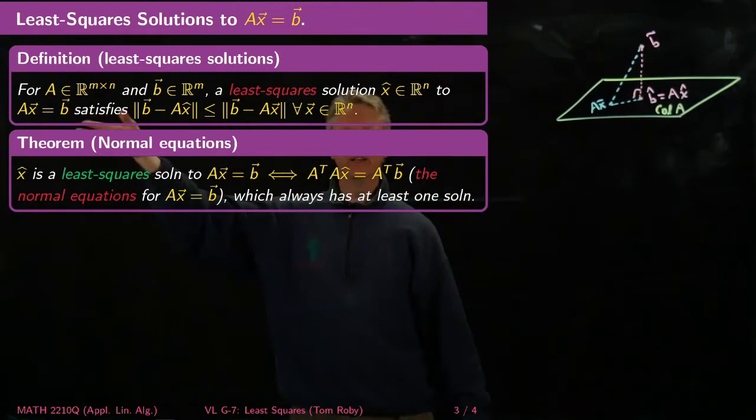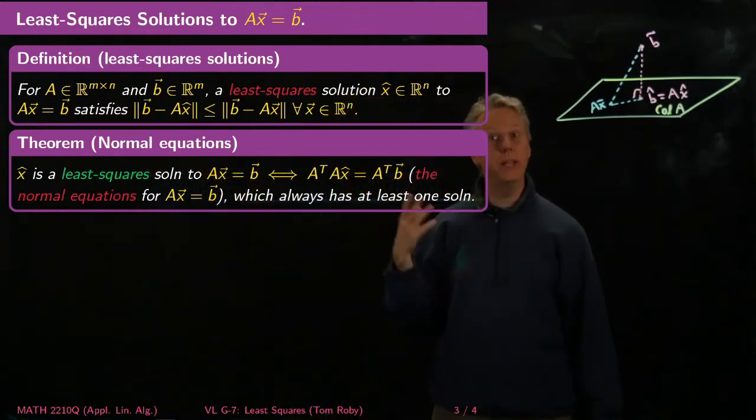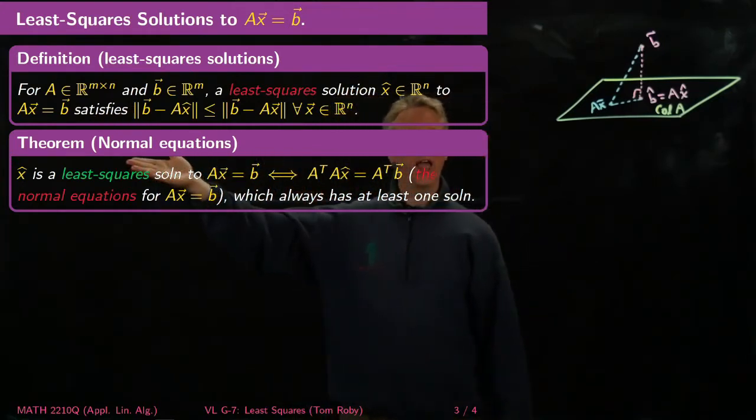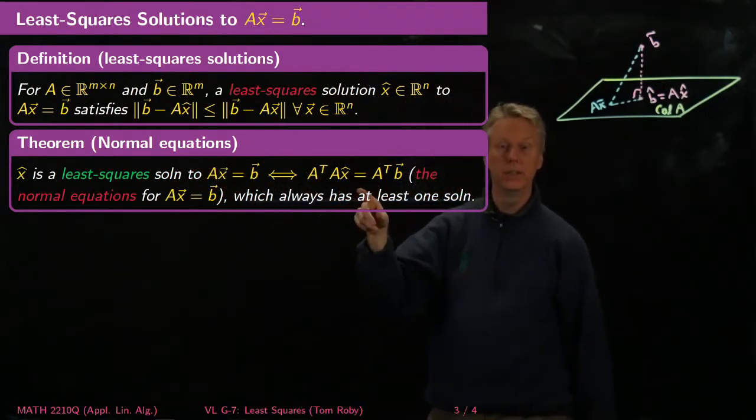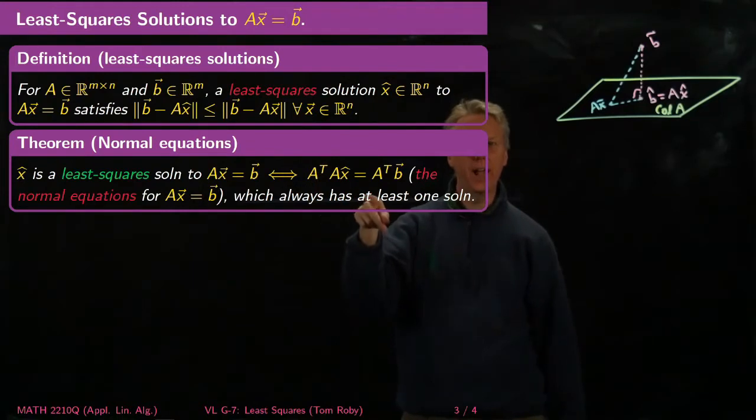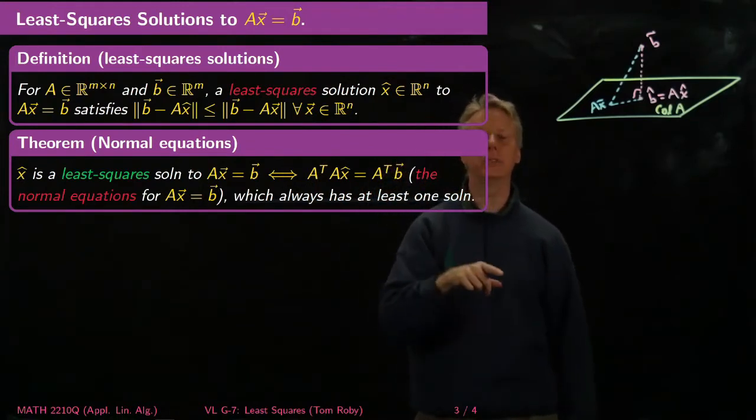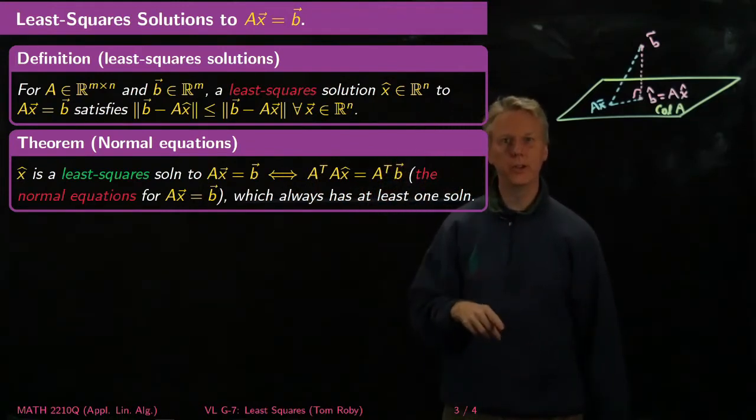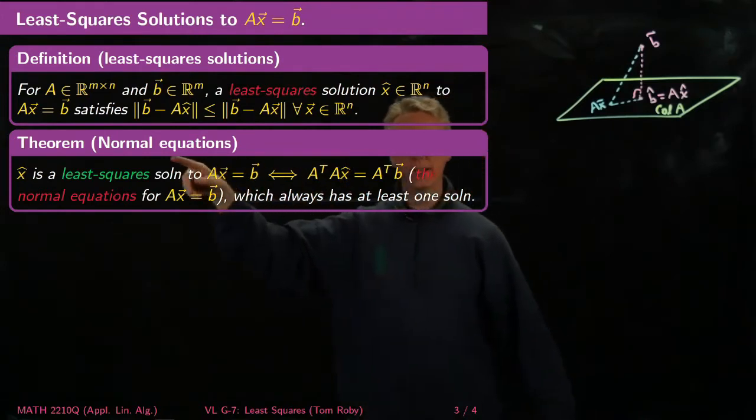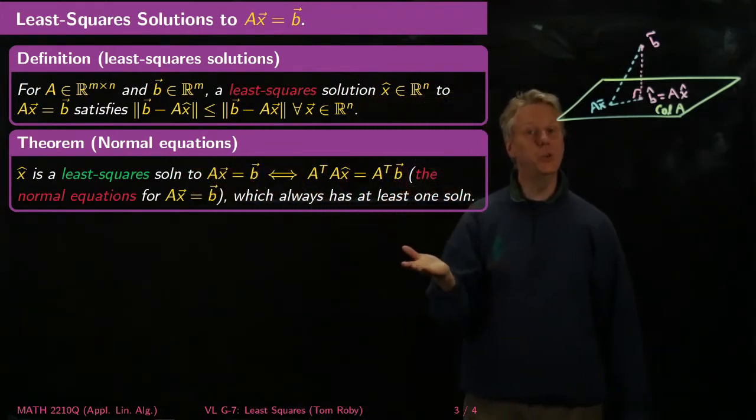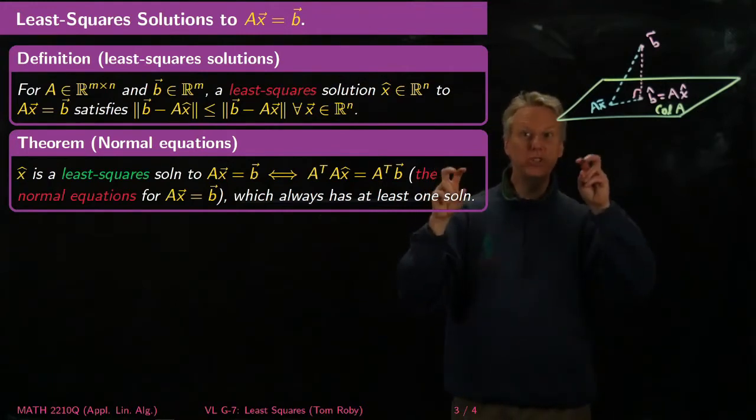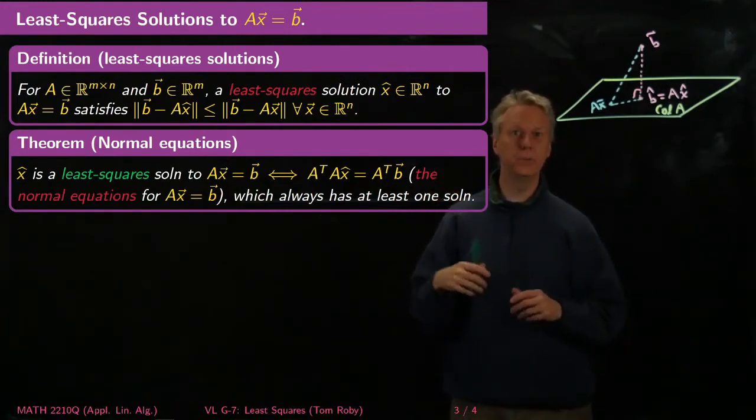So it's a good conceptual definition, but here's the theorem which really lets us compute these things in practice. It turns out that X hat, the least square solution to AX equals B, will be a least square solution to this matrix equation if and only if when I apply A transpose A to X, I get A transpose B. You can think about it as I sort of took AX equals B and I applied A transpose to both sides. And that's the new equation I want to solve.